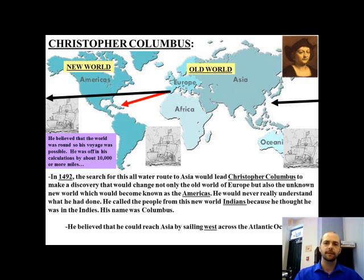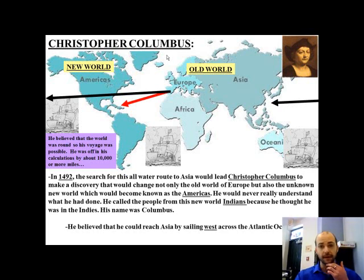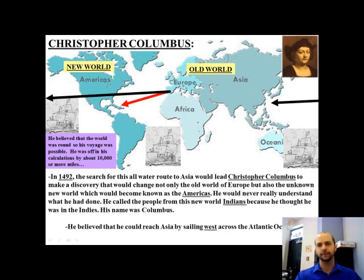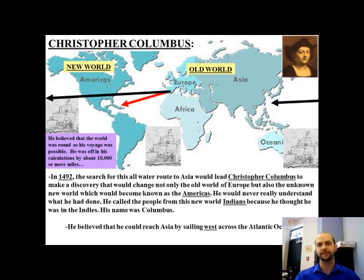Looking at this map, you'll see he set out from Spain and sailed west. That's quite interesting and rather a new concept, because most people up to this point were sailing down around Africa to get over to India and China — coming down around the west coast of Africa and up the east coast all the way over to Asia. He instead went west, and he had statistics and calculations backing him up, along with a lot of different guidance showing that he could make it from Spain all the way west to Asia.